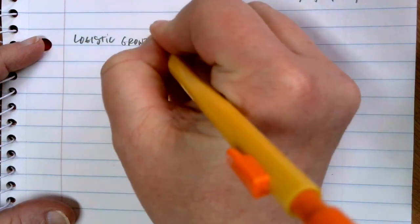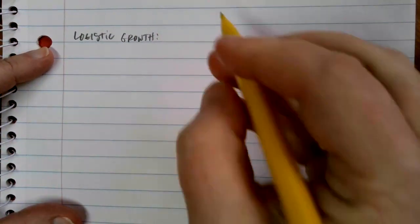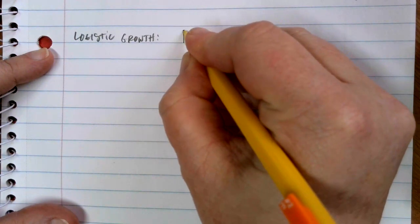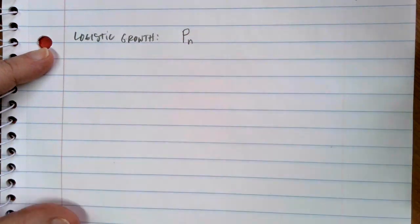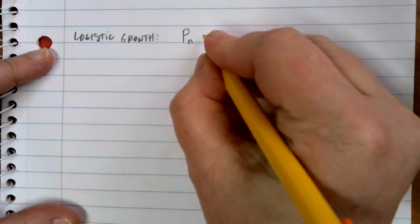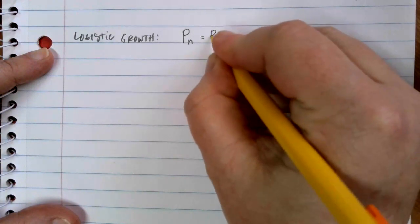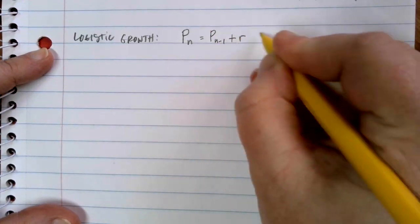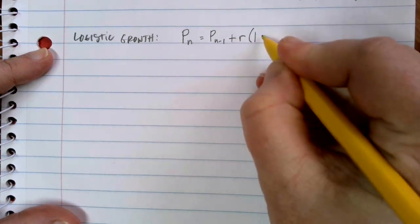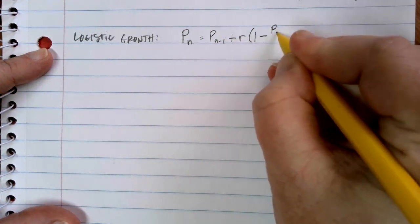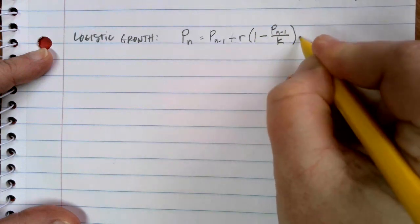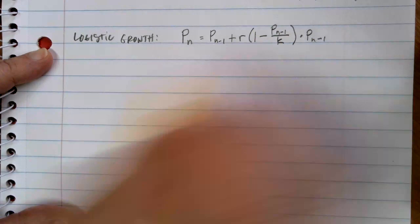Our formula for logistic growth looks a lot different than the formulas that we've been doing so far. Let me write it out. So our logistic growth formula is P with an N subscript is equal to P with an N minus 1 plus R times 1 minus P with the N minus 1 subscript over K and then times by P of N minus 1.